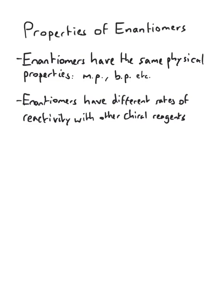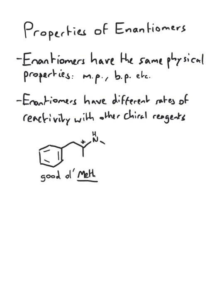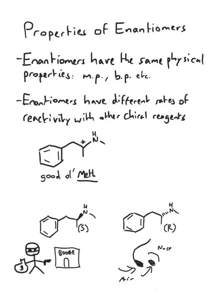For example, methamphetamine. One enantiomer of methamphetamine can be found in Vicks nose sprays and they clear up your nostrils. Whilst the other enantiomer, as we know, will make you want to rob a liquor store.